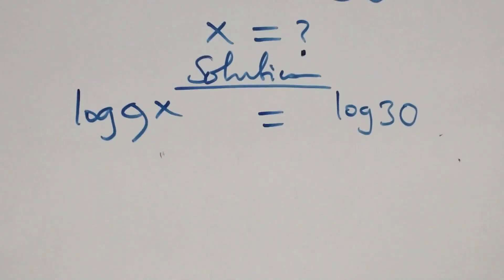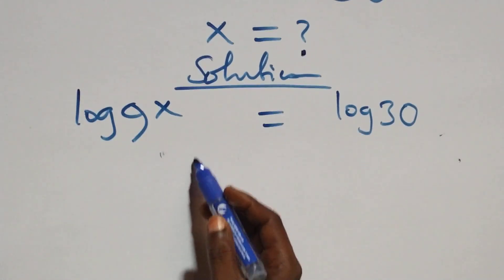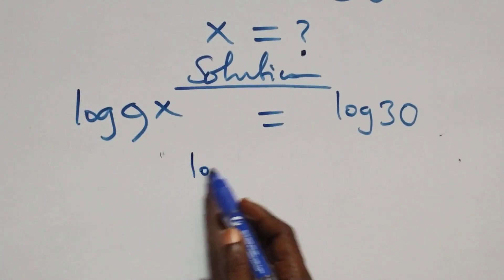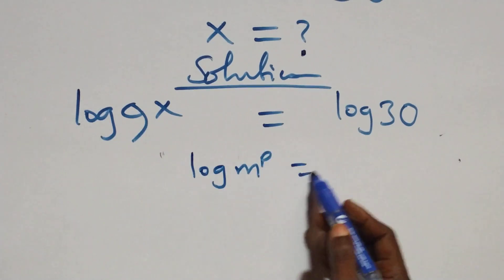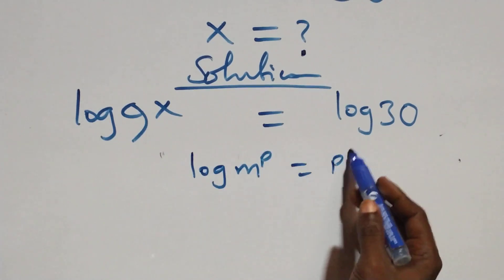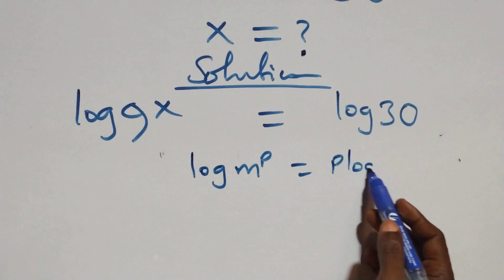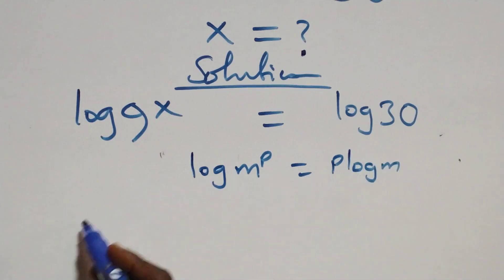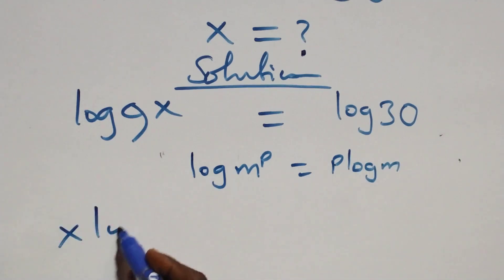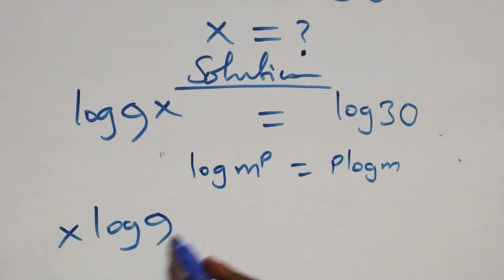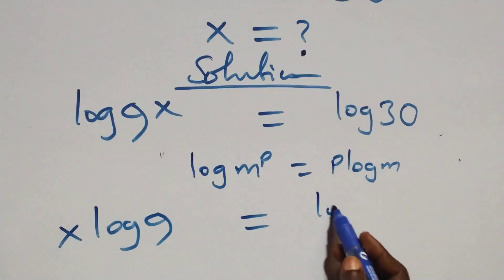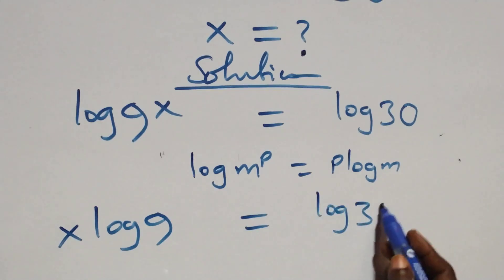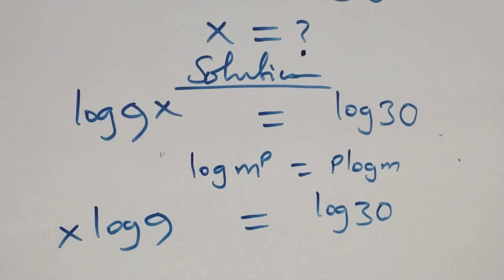The next step, we apply the power law of logarithm, where we have log m raised to the power p, this is the same thing as p log m. At this, we have x log 9 equals to log 30.